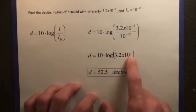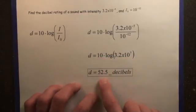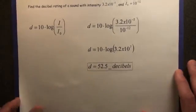So we're just going to do log of 3.2 times 10 to the 7th, then multiply that by 10. You're going to get 52.5 decibels.